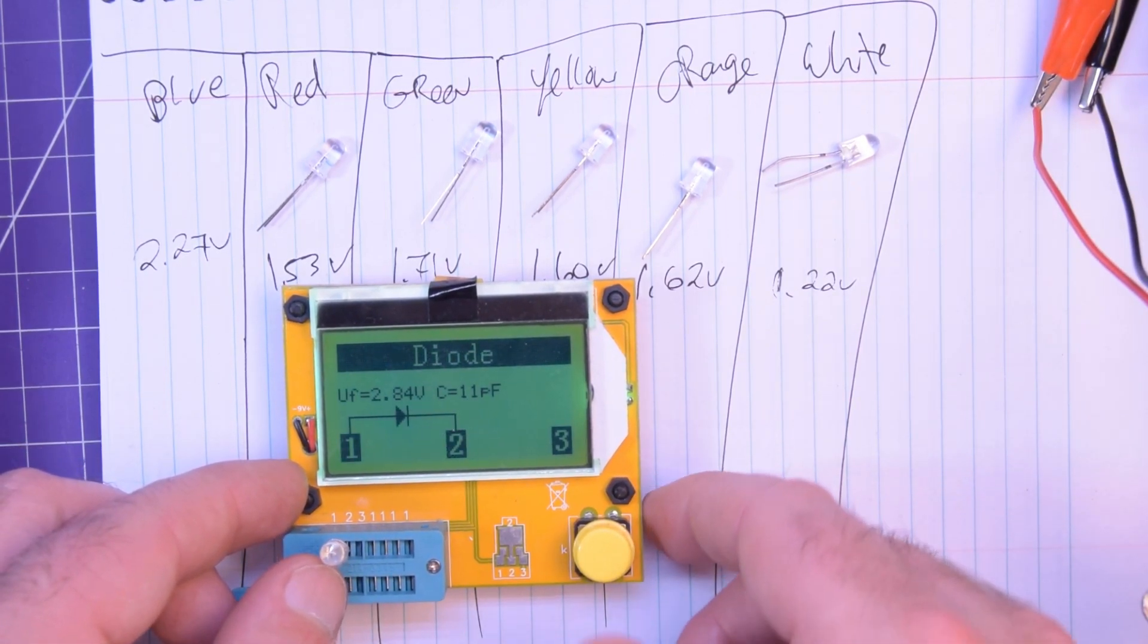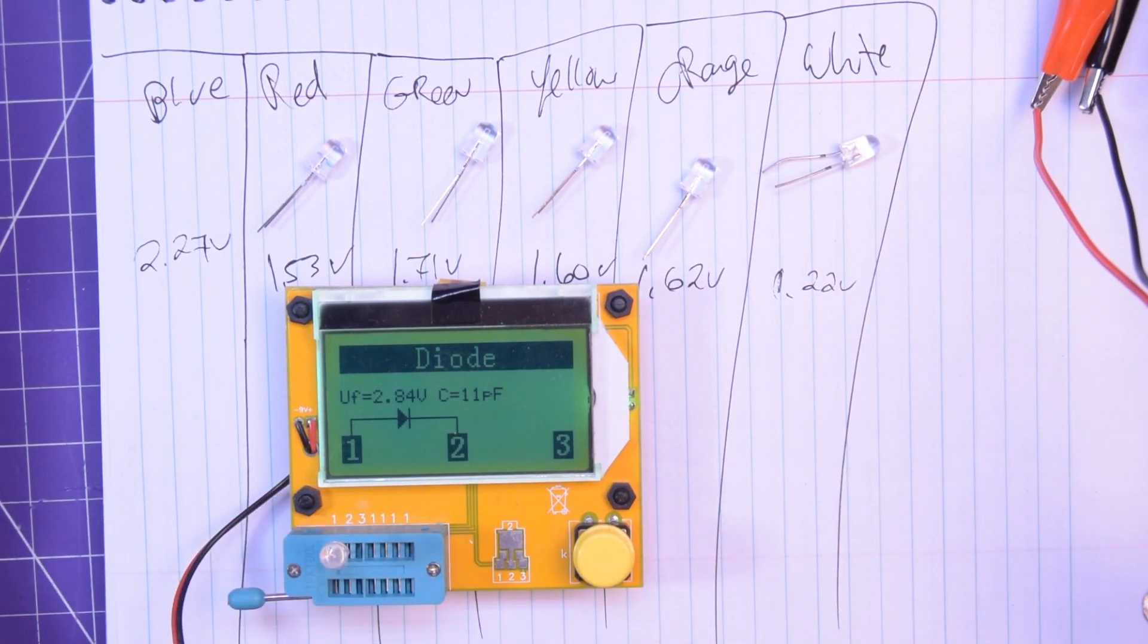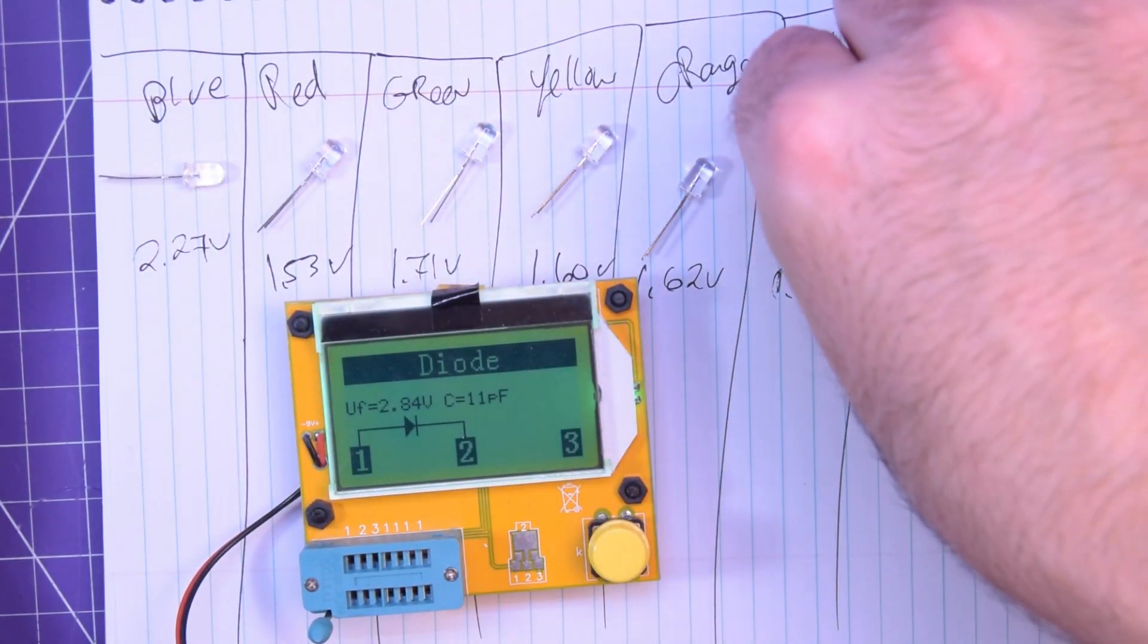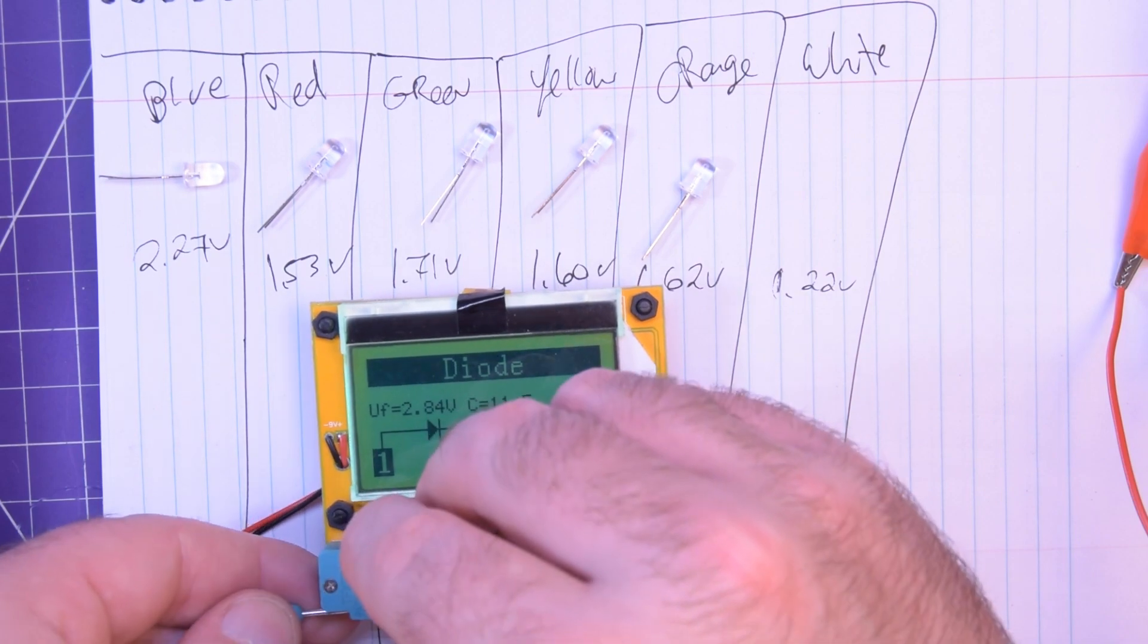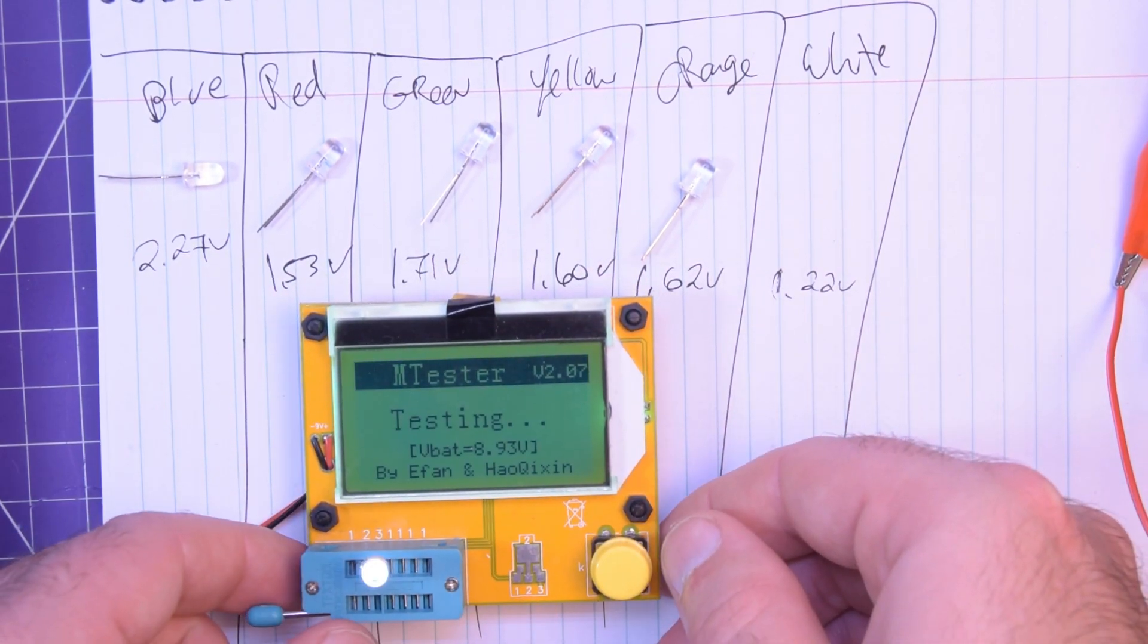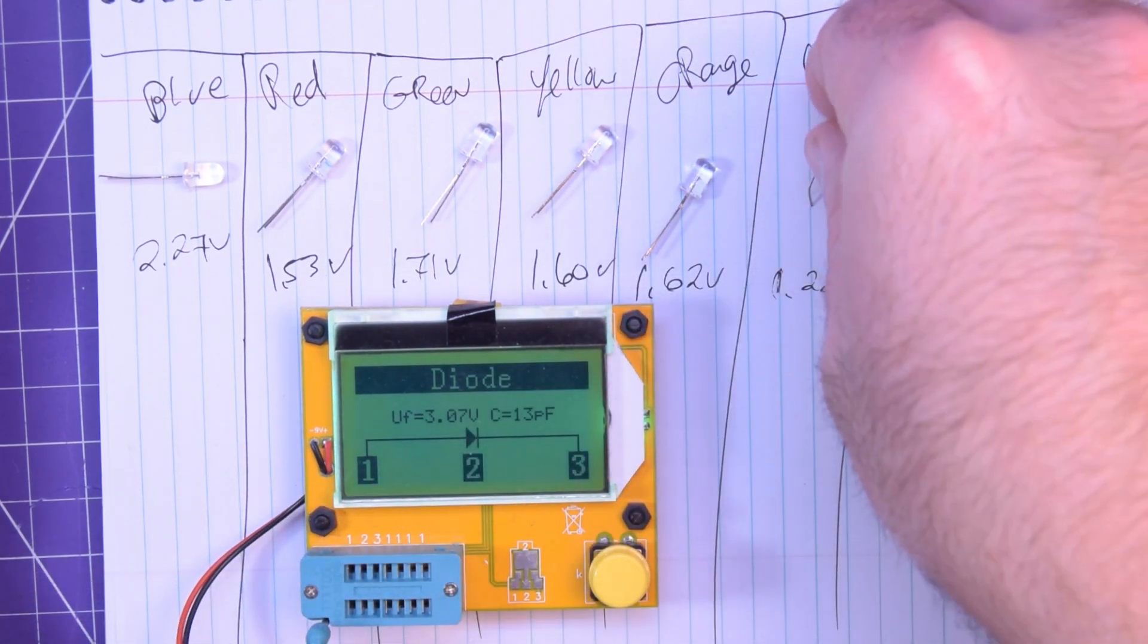Look how bright this thing is. I will see if I can point it right to the camera. There we go. It is quite bright. So, yeah, 2.84 volts forward voltage. And depends on the type of white LED. But it should be very similar. 3.07. Roughly the same. Just a little bit higher.